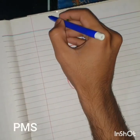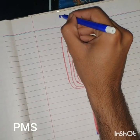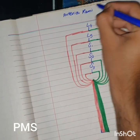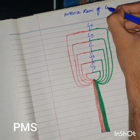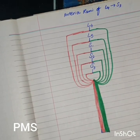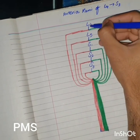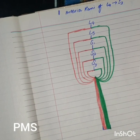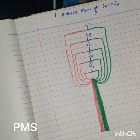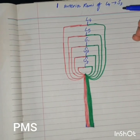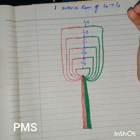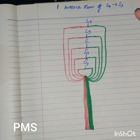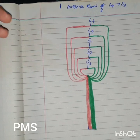The sciatic nerve is formed by the anterior rami of L4 to S3 segments of the spinal cord. This vertical line denotes the anterior rami of the spinal cord. The anterior rami actually divide into two divisions: one is known as the ventral division and the second one is known as the dorsal division.